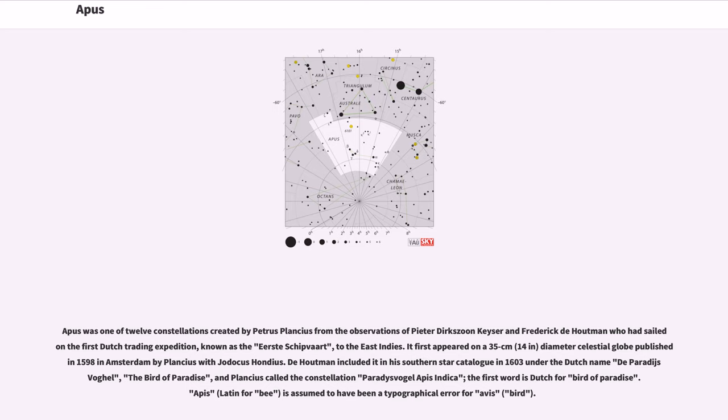Apus was one of 12 constellations created by Petrus Plancius from the observations of Pieter Dirkszoon Keyser and Frederick de Houtman who had sailed in the first Dutch trading expedition, known as the Eerste Schipvaart, to the East Indies. It first appeared on a 35 cm, 14 inch diameter celestial globe published in 1598 in Amsterdam by Plancius with Jodocus Hondius. De Houtman included it in his southern star catalogue in 1603 under the Dutch name De Paradijsvogel, the bird of paradise, and Plancius called the constellation Paradysvogel Apis Indica, the first word is Dutch for bird of paradise.